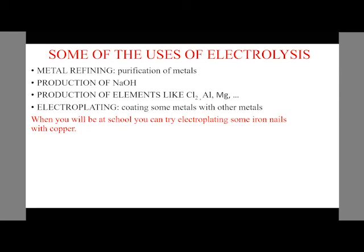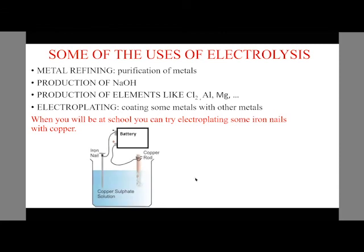When you will be at school, you can try electroplating some iron nails with copper. And the diagram of the setup you will have is this one. You have the iron nail connected to the negative terminal of the power supply, and the copper rod, which is connected to the positive terminal of our power supply. And we have electrolyte, which is a solution of copper two sulfate.